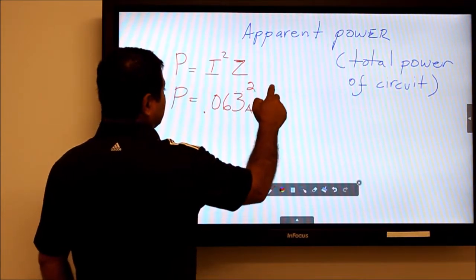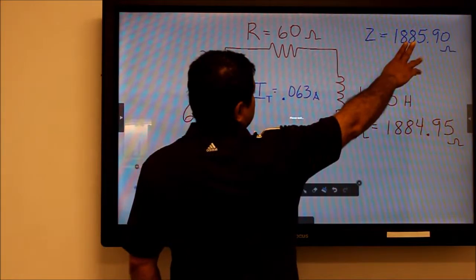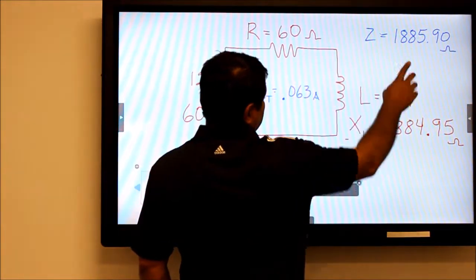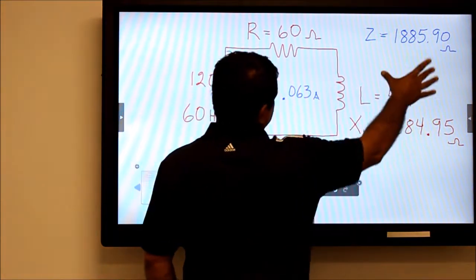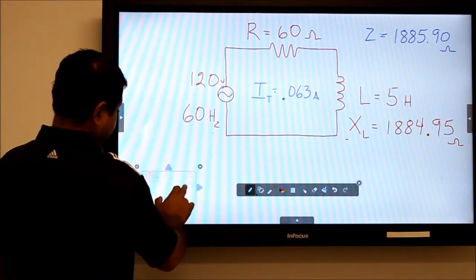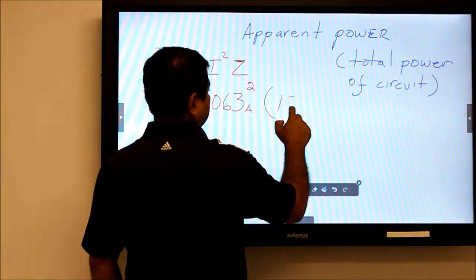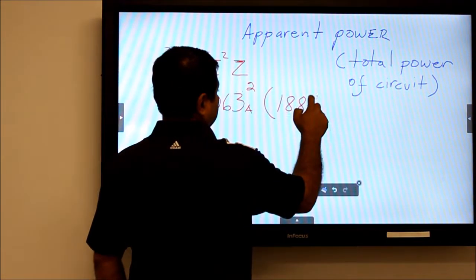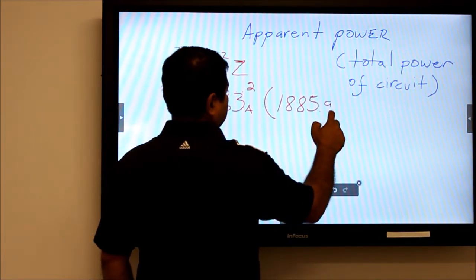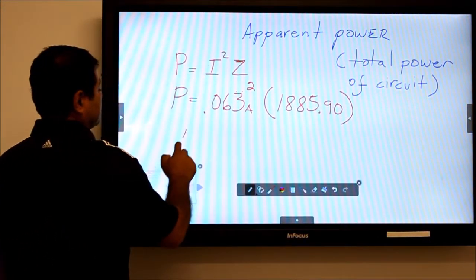Don't forget to square it, and you're going to multiply times the impedance. Make sure you don't use the inductive reactance - we're using the impedance, and it's 1885.90 ohms.